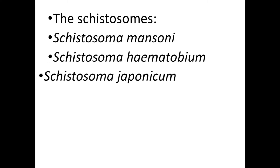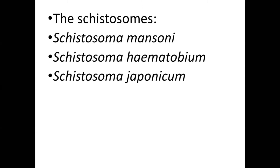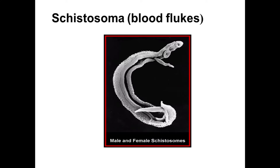الـ Schistosoma — رح نتحدث عن three species of them: الـ Schistosoma mansoni، الـ Schistosoma haematobium، والـ Schistosoma japonica. بالنسبة للـ Schistosoma، حكينا have separate sexes — عندها male وعندها female. وين بتكون موجود الـ Schistosoma؟ في blood vessels. So the second name of الـ Schistosoma is blood fluke. إذا blood fluke هي الـ Schistosoma — have separate sexes male and female and located in blood vessels.